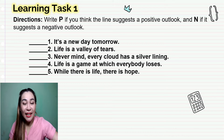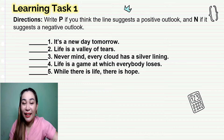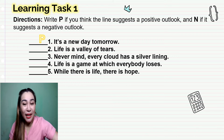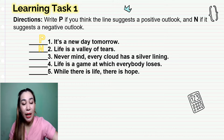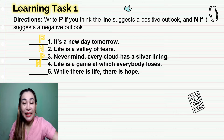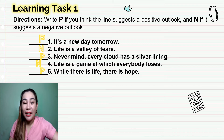Are you done? Now let's check if your answers are correct. For number one, the answer is P — positive outlook. For number two, the answer is N — negative outlook. For number three, the answer is P — positive outlook. Number four, the answer is N — negative outlook. And last but not least, number five, the answer is P — positive outlook. Did you get a perfect score? Good job! I am sure that you really listened and paid attention to our discussion earlier.